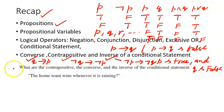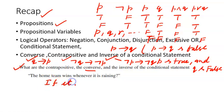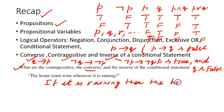Let us quickly apply this to the statement: 'The home team wins whenever it is raining.' We first rephrase it as: 'If it is raining, then the home team wins.' Let p be 'it is raining' and q be 'the home team wins.'